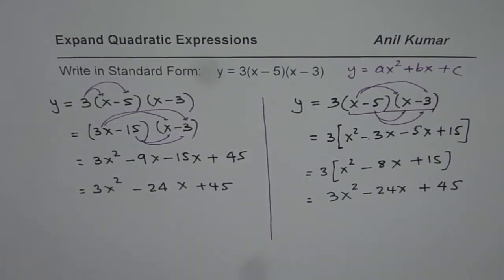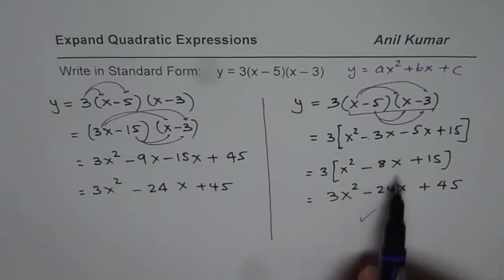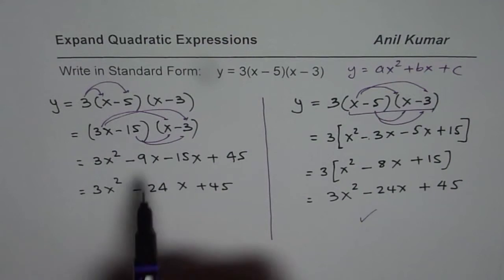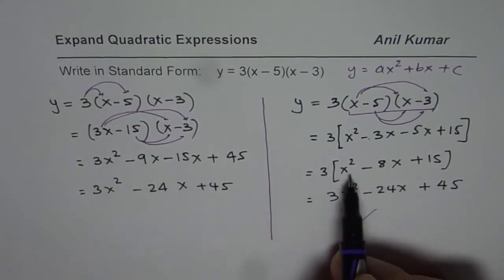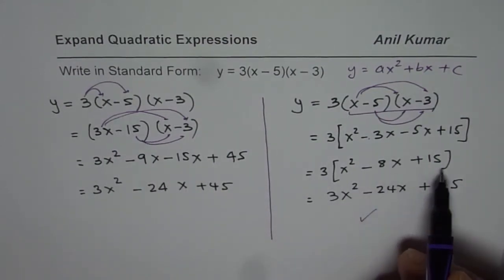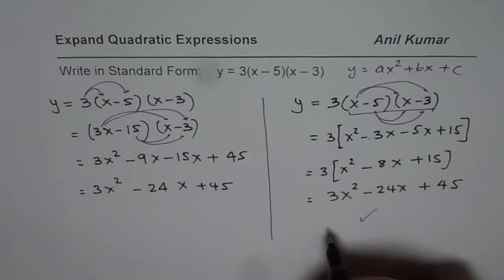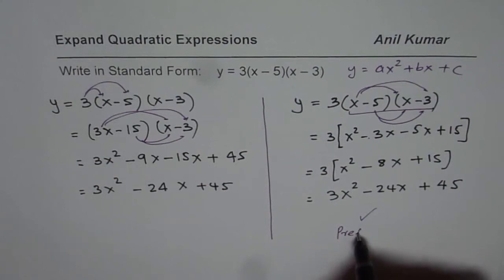You can adopt any of these methods, but I prefer the second method. The reason here is that you are dealing with smaller numbers. You are not dealing with bigger numbers. So you are always dealing with smaller numbers. It is kind of easier. You make less mistakes. So that is my preference.